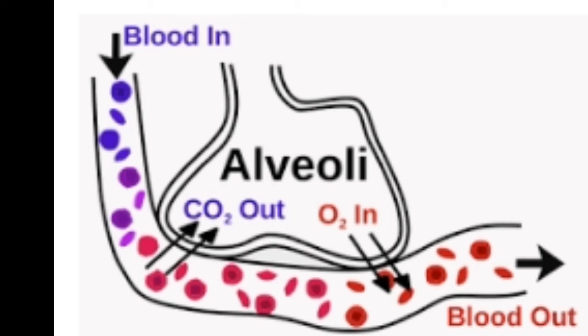The roots absorb oxygen and give out carbon dioxide into the soil. In the roots, diffusion occurs across the membrane surface of the living cells. In submerged aquatic plants such as Chlamydomonas and Spirogyra, gaseous diffusion occurs through the body surface.